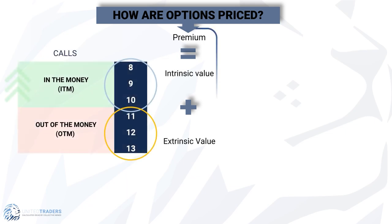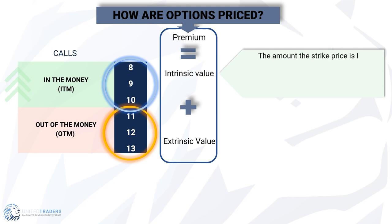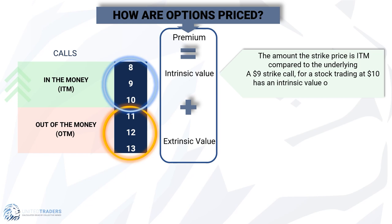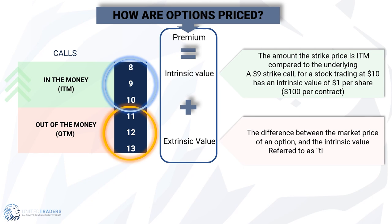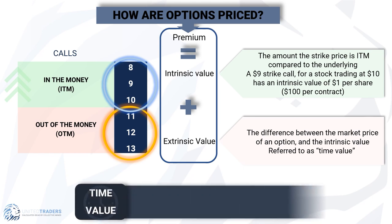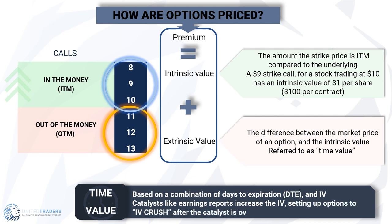Options pricing, also known as premium, can be divided into two categories: intrinsic value and extrinsic value. Intrinsic value is the amount the strike price is in the money compared to the underlying — a $9 strike call for a stock trading at $10 has an intrinsic value of $1 per share, or $100 per contract. Extrinsic value is the difference between the market price of an option and the intrinsic value, referred to as time value, based on a combination of days to expiration and IV. Catalysts like earnings reports increase the IV, setting up options for an IV crush after the catalyst is over.